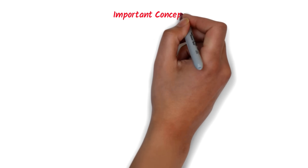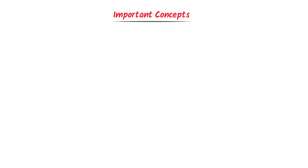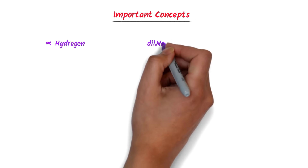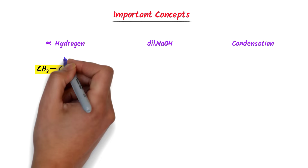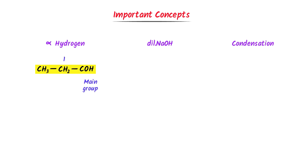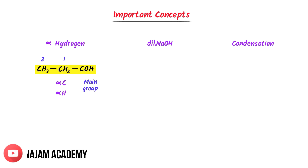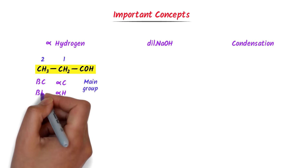Let me teach you some important concepts related to aldol condensation: alpha hydrogen, dilute sodium hydroxide, and the meaning of condensation. Consider this organic compound. This is the functional group of aldehyde — we call it the main group. This is the first carbon attached to the main group; we call it alpha carbon. The hydrogen atoms with the alpha carbon are called alpha hydrogens. This is the second carbon attached to the main group; we call it beta carbon. The hydrogen atoms with the beta carbon are called beta hydrogens.